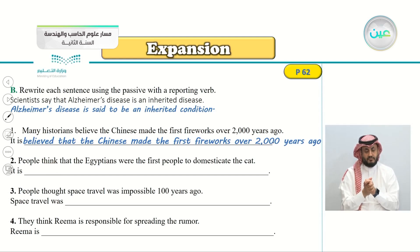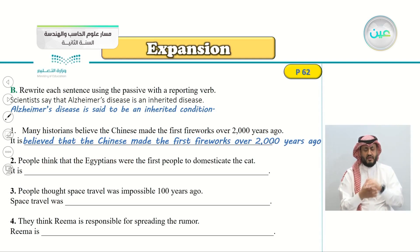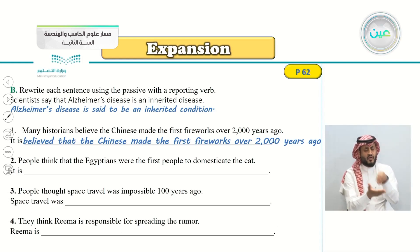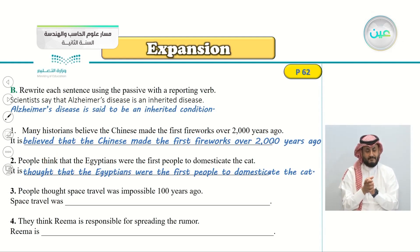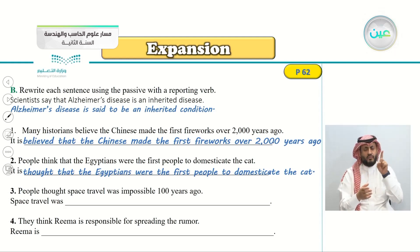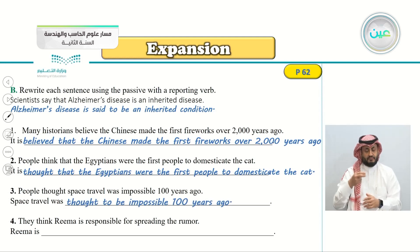Number two: 'People think that the Egyptians were the first people to domesticate the cat.' Because the verb is 'think,' the answer is: 'It is thought that the Egyptians were the first people to domesticate the cat.' Number three: 'People thought space travel was impossible 100 years ago.' The answer is: 'Space travel was thought to be impossible 100 years ago.'